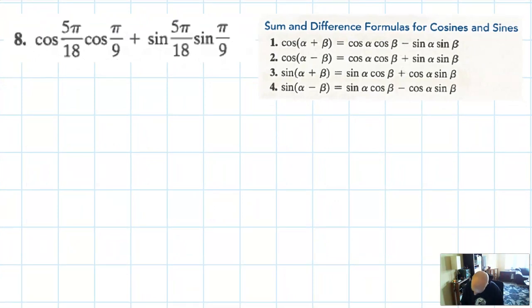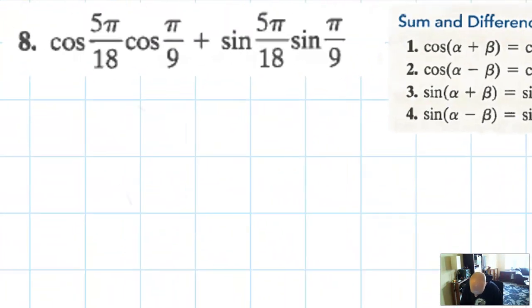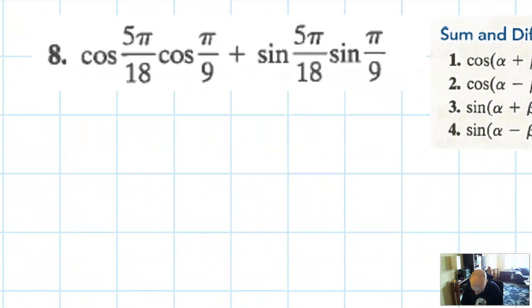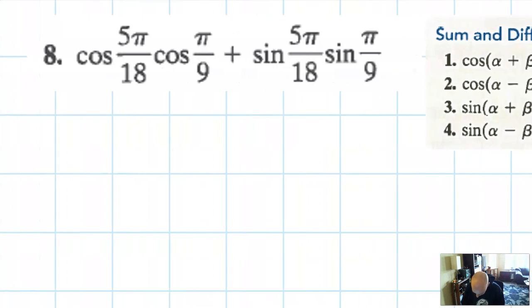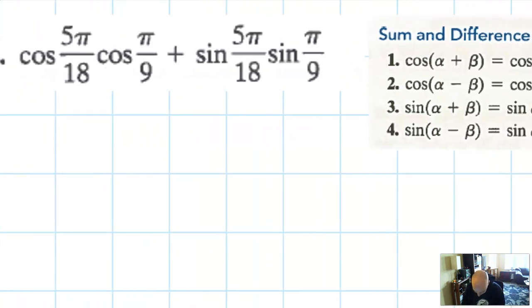Okay, so the first problem you might see is a problem like this, where it asks you to evaluate cosine of 5π over 18 times cosine of π over 9 plus sine of 5π over 18 times sine of π over 9. I'm already tired just reading that problem out, and I already see a problem here. I have no idea what, I don't even know what a π over 18 is. I guess I could try to sketch it, and same with a π over 9, no clue. It's not on my unit circle.